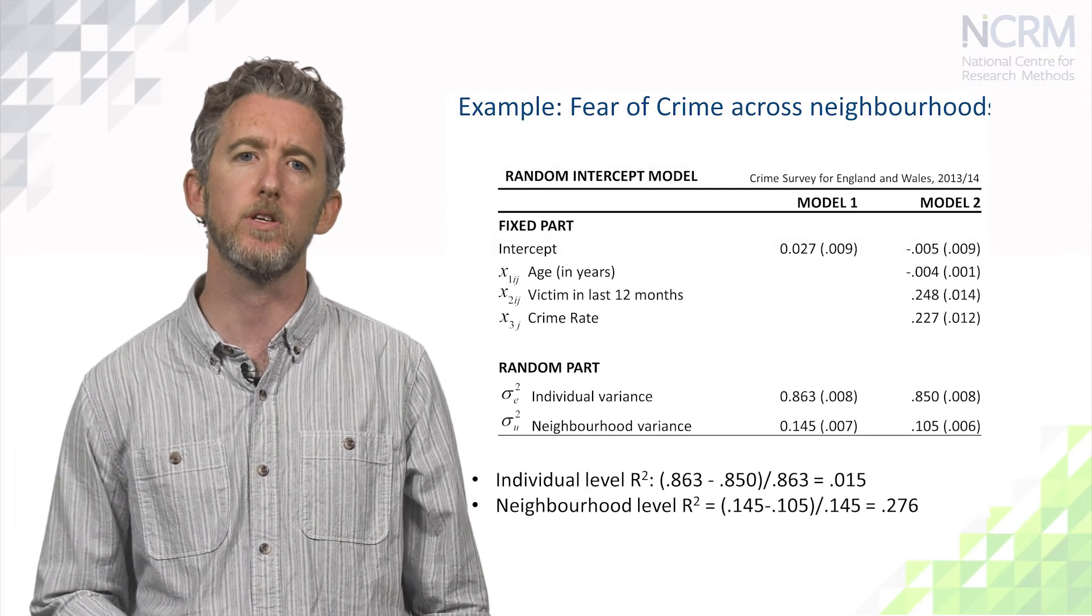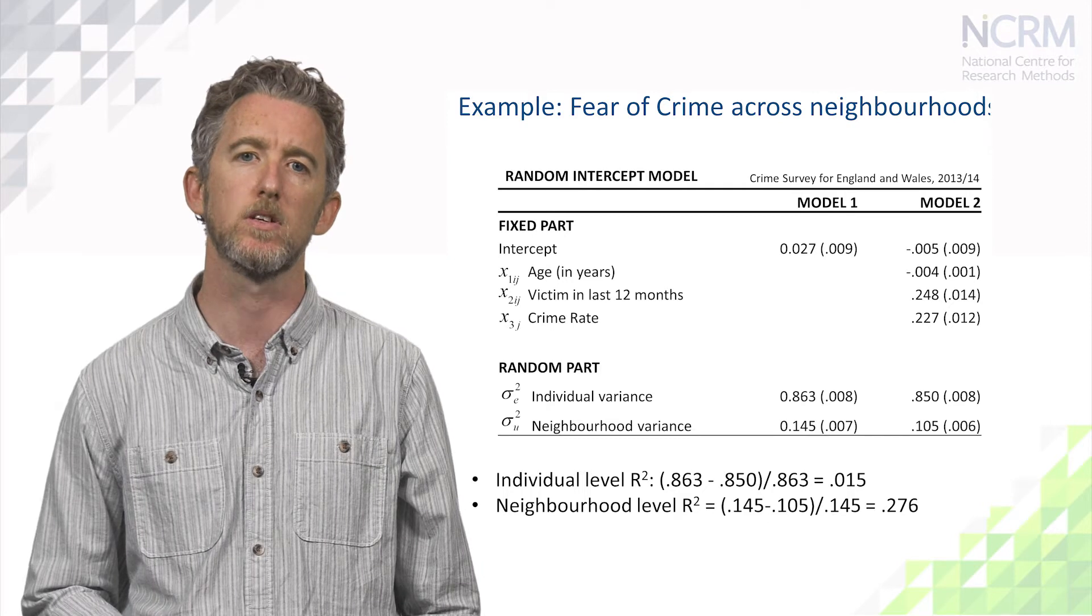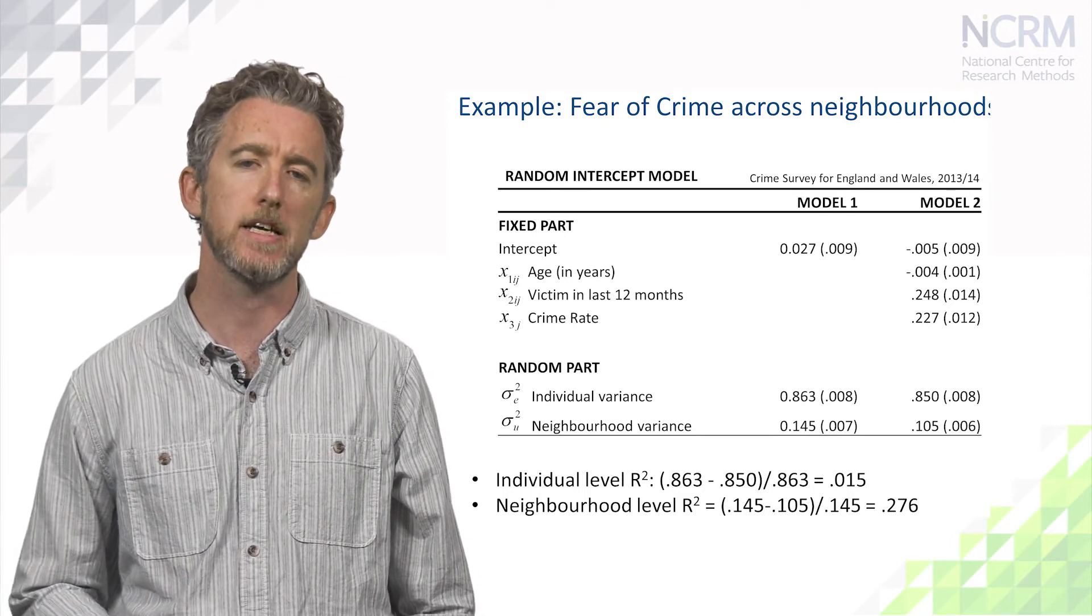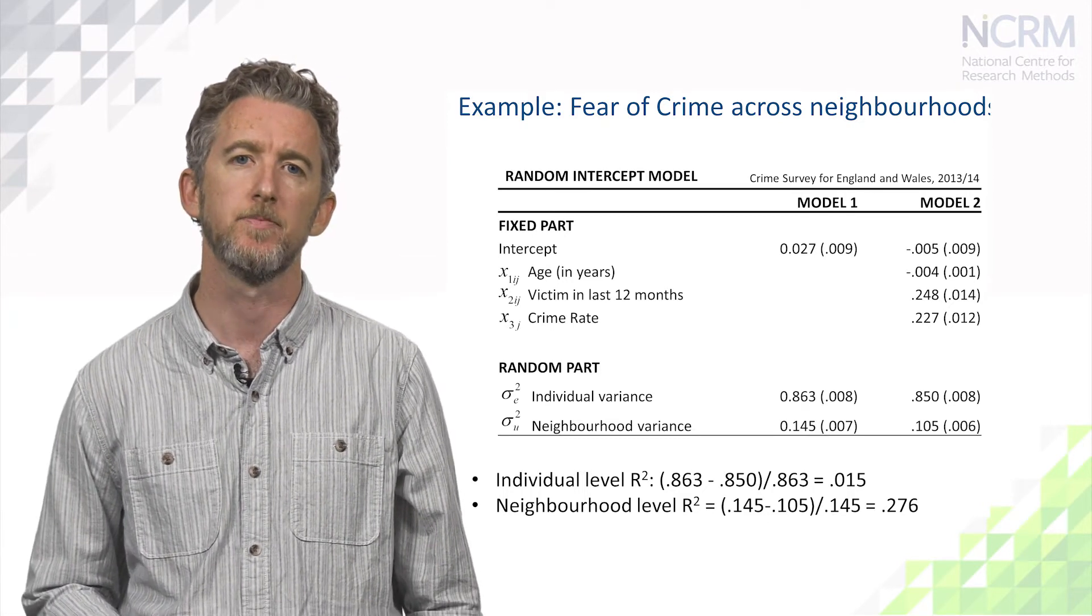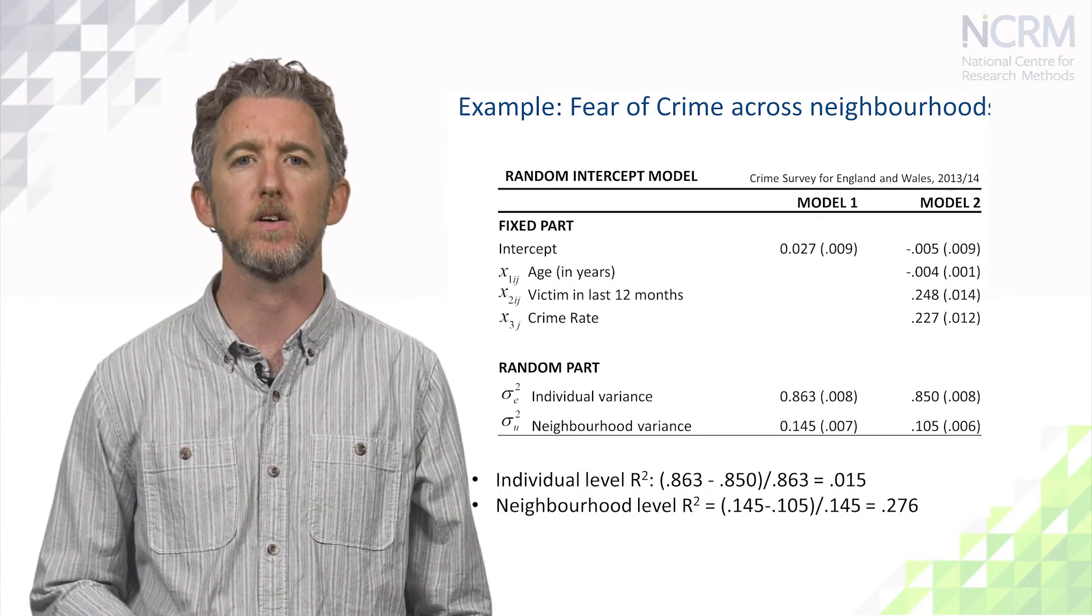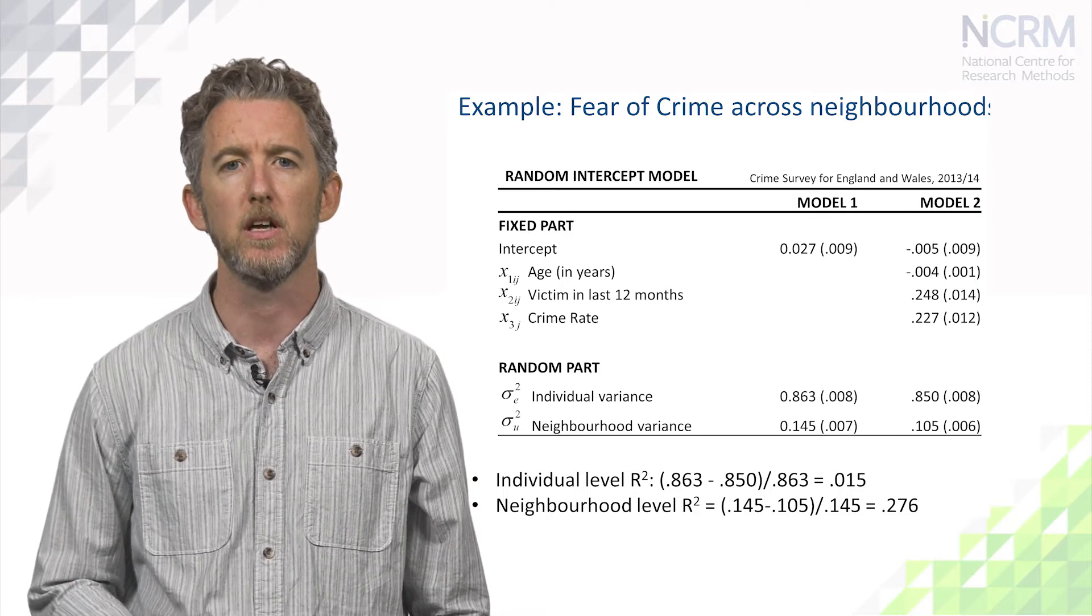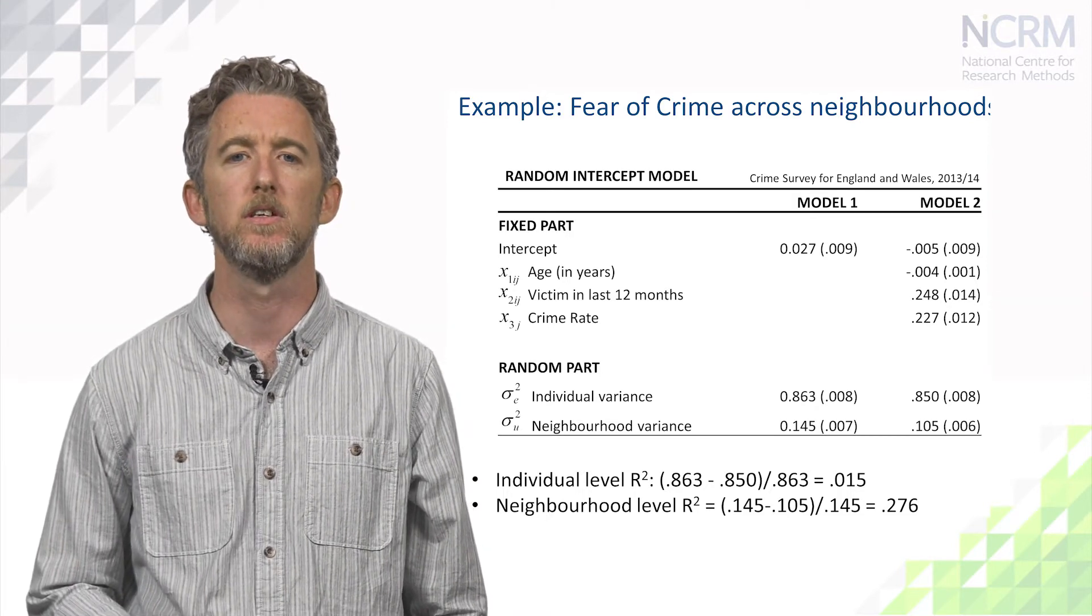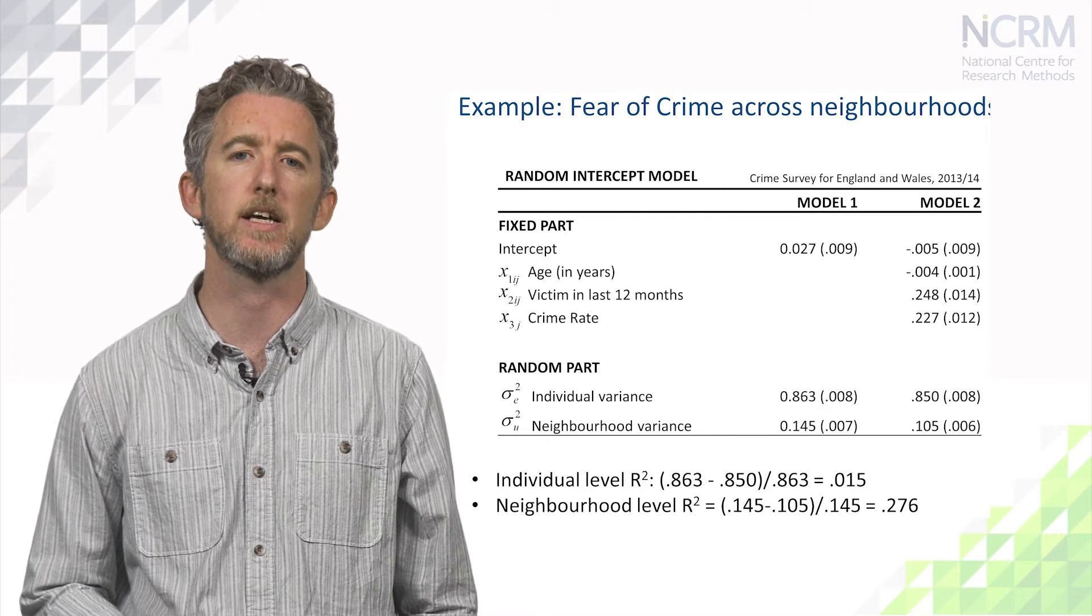So, returning to our worked example using the Crime Survey for England and Wales, in Model 2 we include three explanatory variables. The first two, age and whether or not you've been a victim of crime in the last year, a dummy variable, are measured at the individual level.